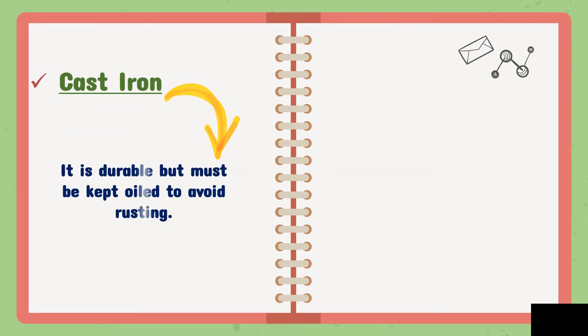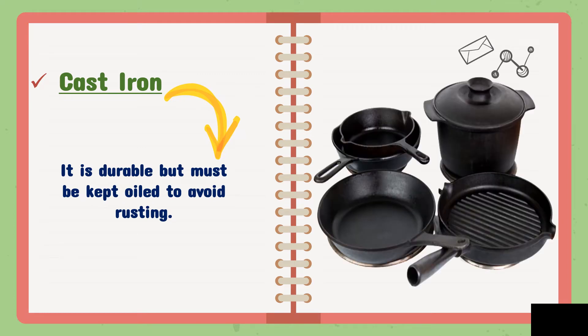Number four is cast iron. It is durable but must be cleaned with oil to avoid rust. These are the heavy items you see at home — used for frying. Because of their weight, if accidentally dropped they can hurt. They need to be oiled regularly to prevent moisture and rust.